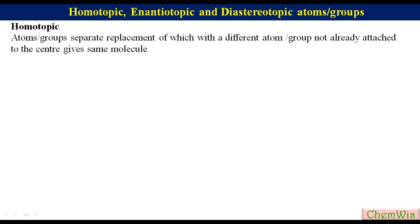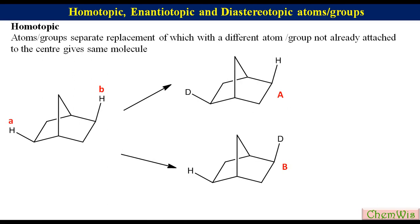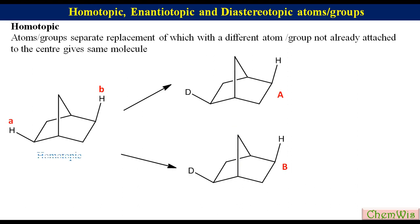Now we are going to take the example of the bicyclic norbornane system. We have to find the relation between protons A and B. Replacement of HA with deuterium gives structure A and that of HB gives structure B. If we rotate structure B 180 degrees about this axis, we find that structures A and B are the same. So HA and HB are homotopic.